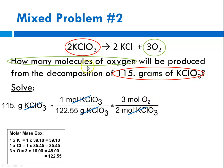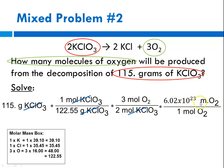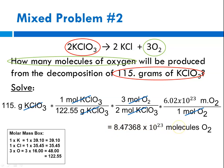Now I'm at moles of oxygen, but I want molecules of oxygen, so I multiply by Avogadro's number — for every mole of oxygen there are 6.02 times 10 to the 23rd representative particles, in this case molecules of oxygen. Moles of oxygen cancels out and I'm at molecules of oxygen. Plugging into the calculator: 115 times 1, divided by 122.55, times 3, divided by 2, times 6.02 times 10 to the 23rd, divided by 1, equals 8.47368 times 10 to the 23rd. Going back to the original problem, we were given only one measurement — 115 grams — that's 3 sig figs. Our third significant digit is the 7, so our answer is 8.47 times 10 to the 23rd molecules of oxygen.